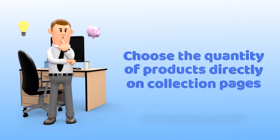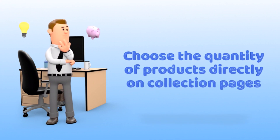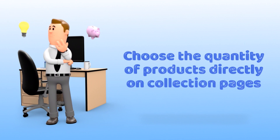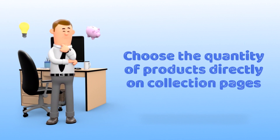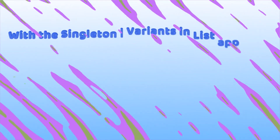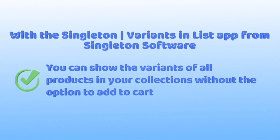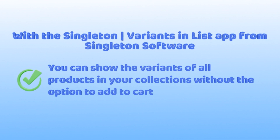But that's not all. The Singleton Variants in List app from Singleton Software also allows customers to choose the quantity of products they want to purchase directly on collection pages. And you can even show the variants of all products in your collections without the option to add to cart, giving customers an even more comprehensive view of your product offerings.